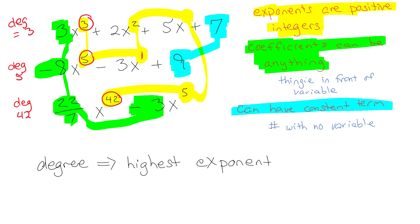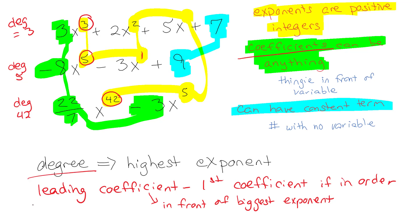The leading coefficient would be the, so I'll write that, leading coefficient is basically the first coefficient if you have them in order. These are all in order, like the cube is bigger than the squared, is bigger than the one, is bigger than the nothing. So the 42 is the biggest exponent, so you could also say the leading coefficient is a coefficient in front of biggest exponent if it's not in order. So that's not too bad. So we've got a couple of words: coefficient, degree, and leading coefficient.